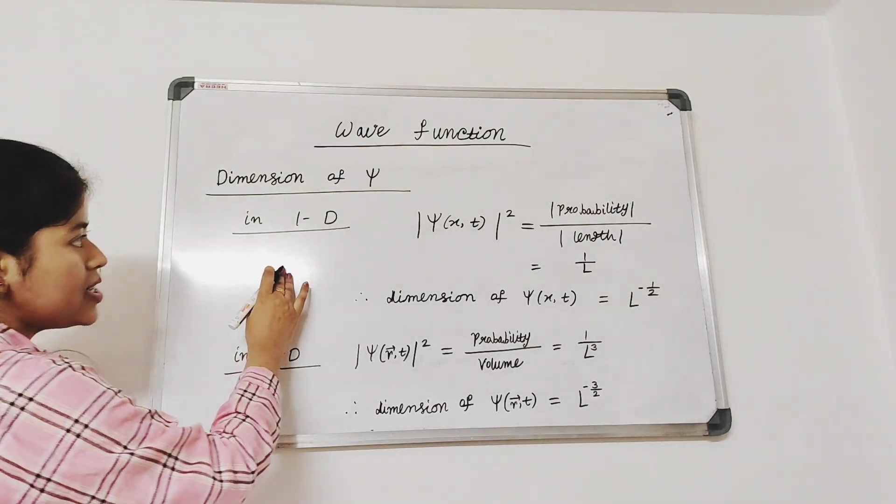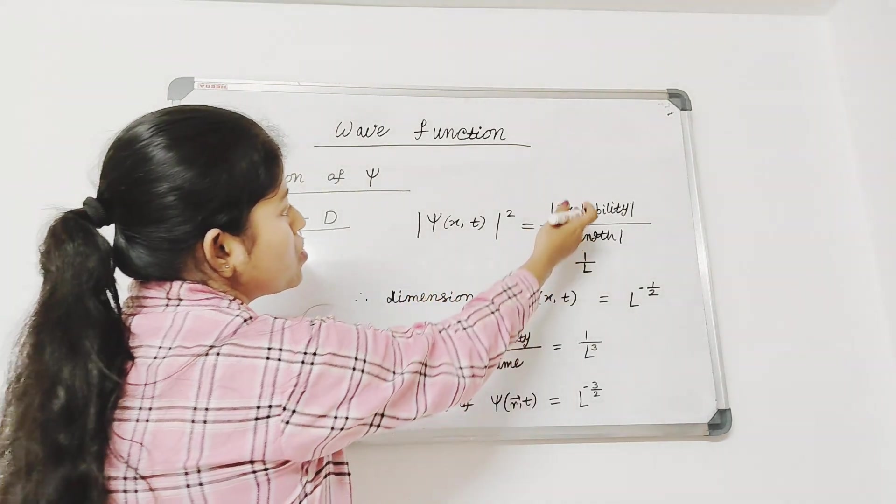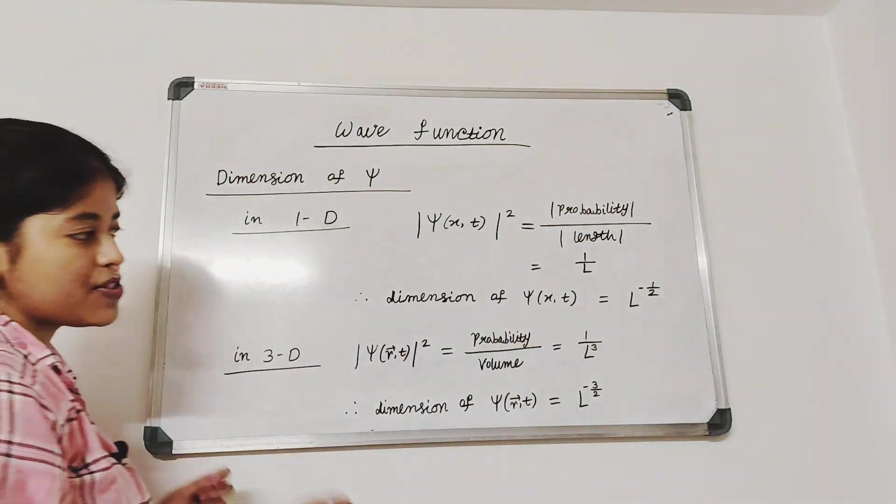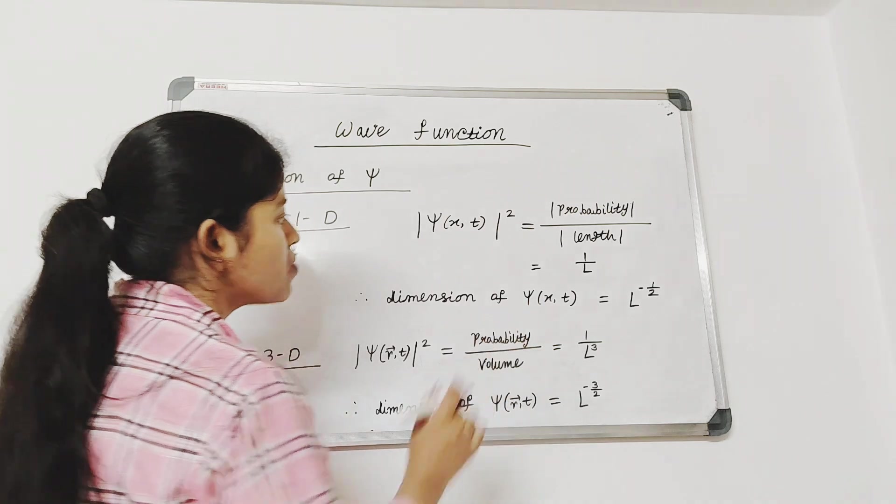Now, the dimension of psi in 1D, mod psi square equals mod value of probability by mod value of length which equals 1 by L. So, dimension of psi in 1D is L to the power minus 1 by 2.